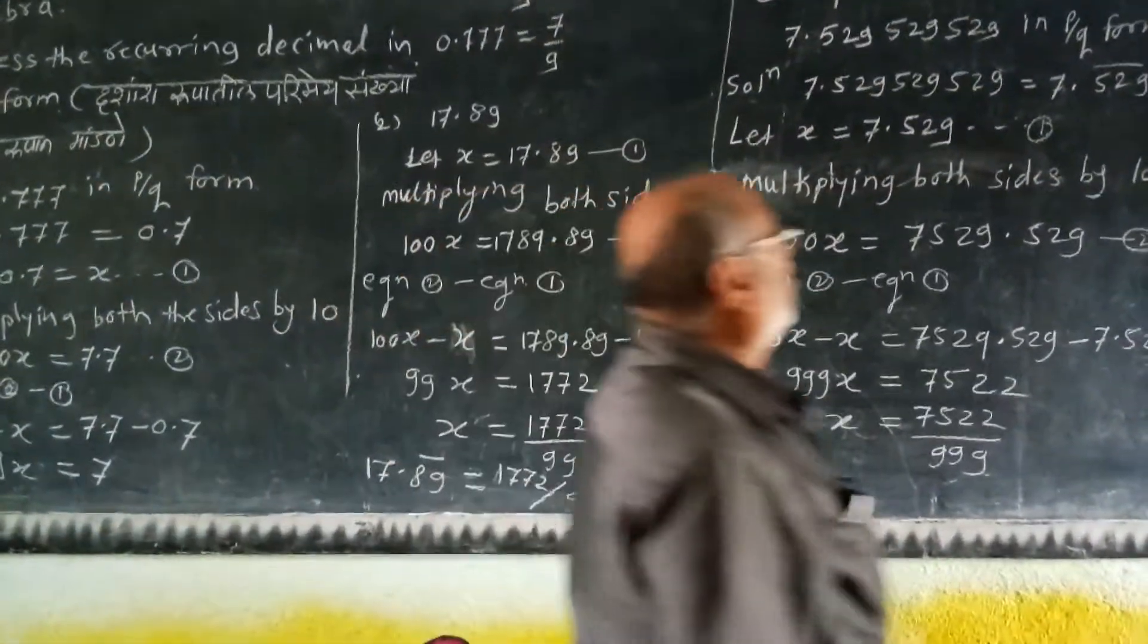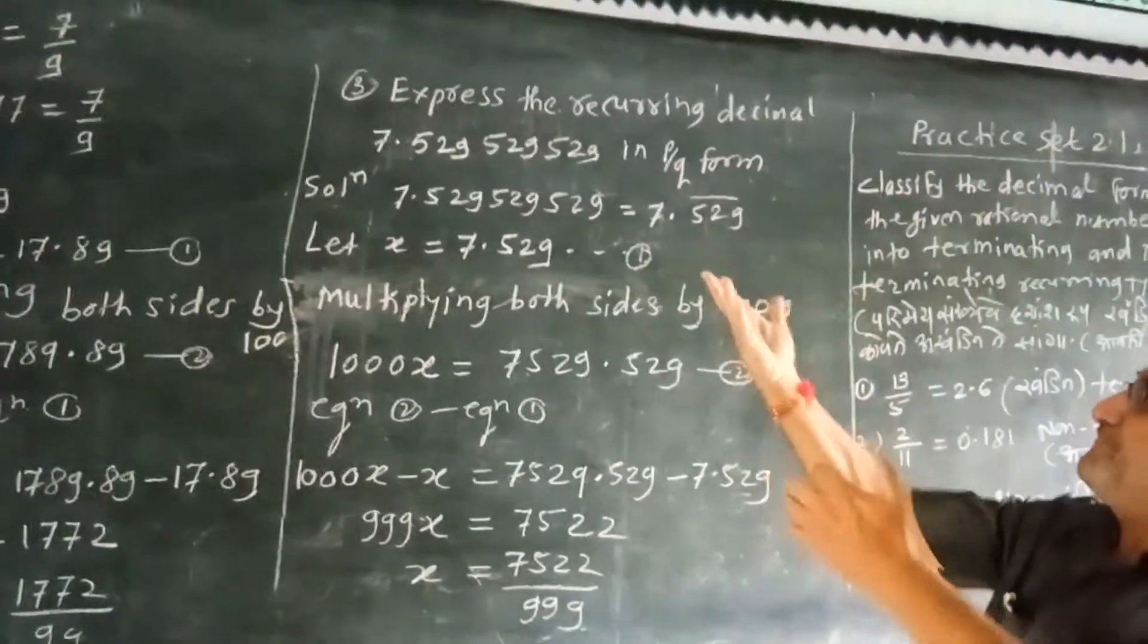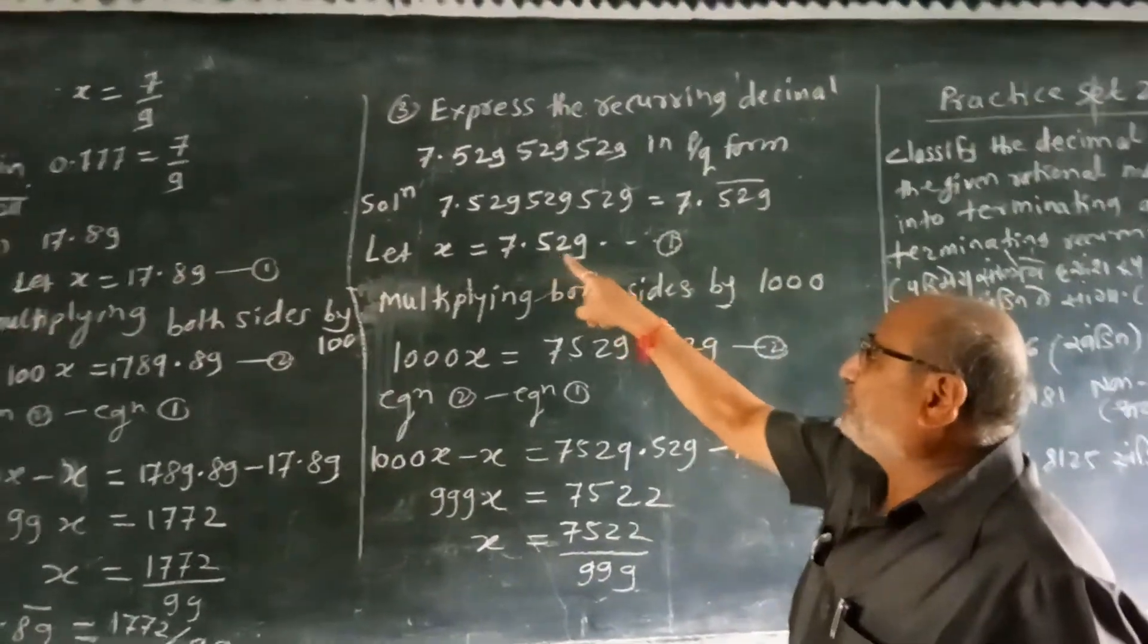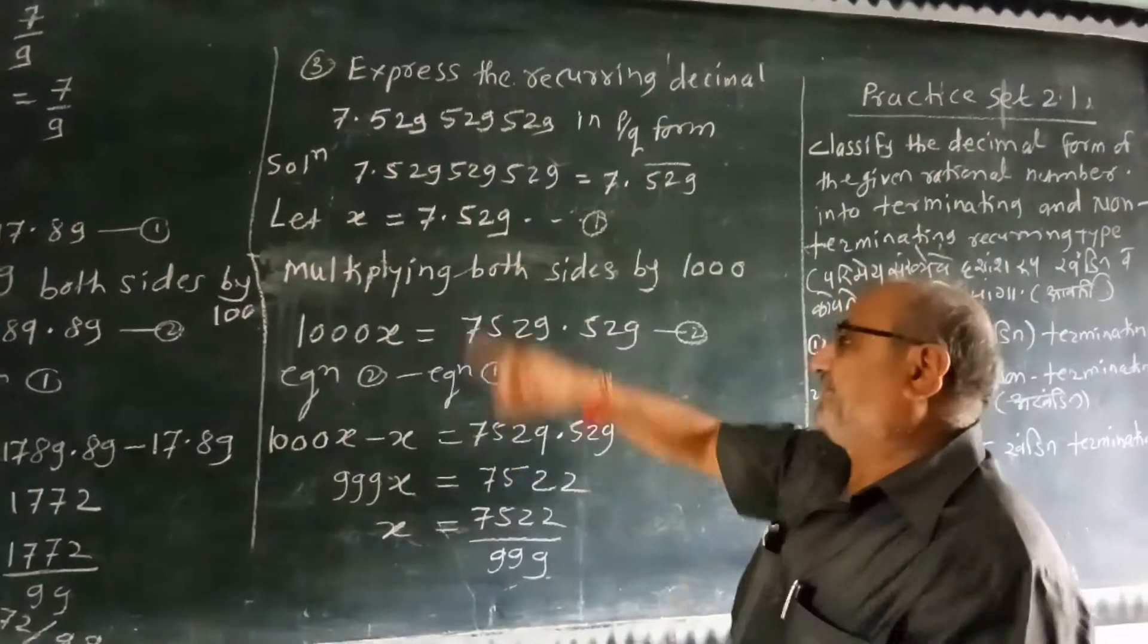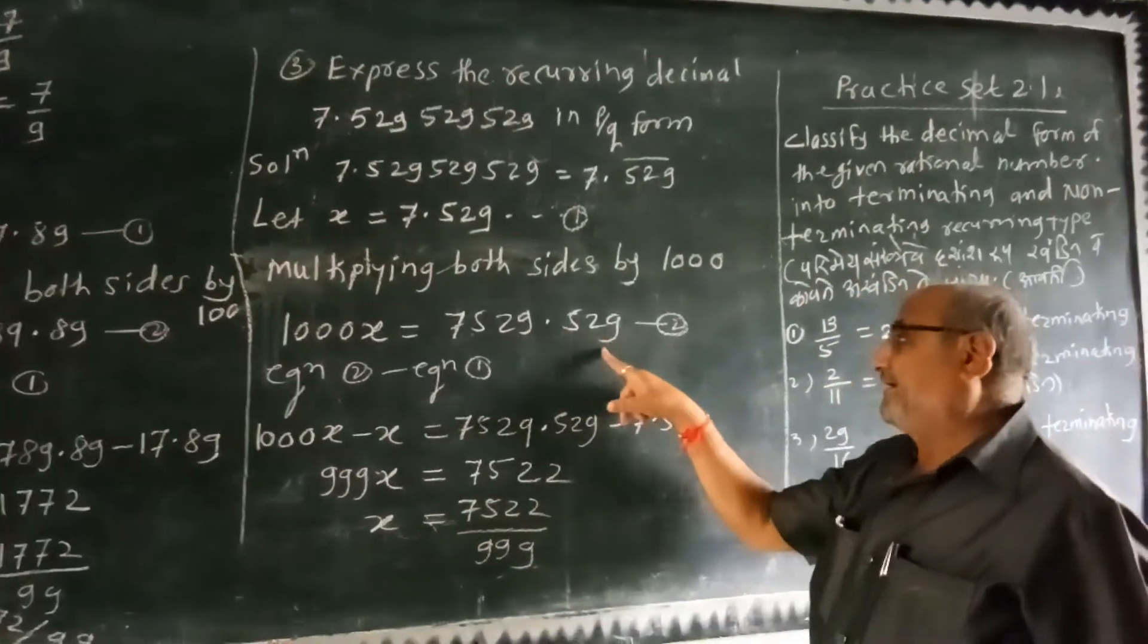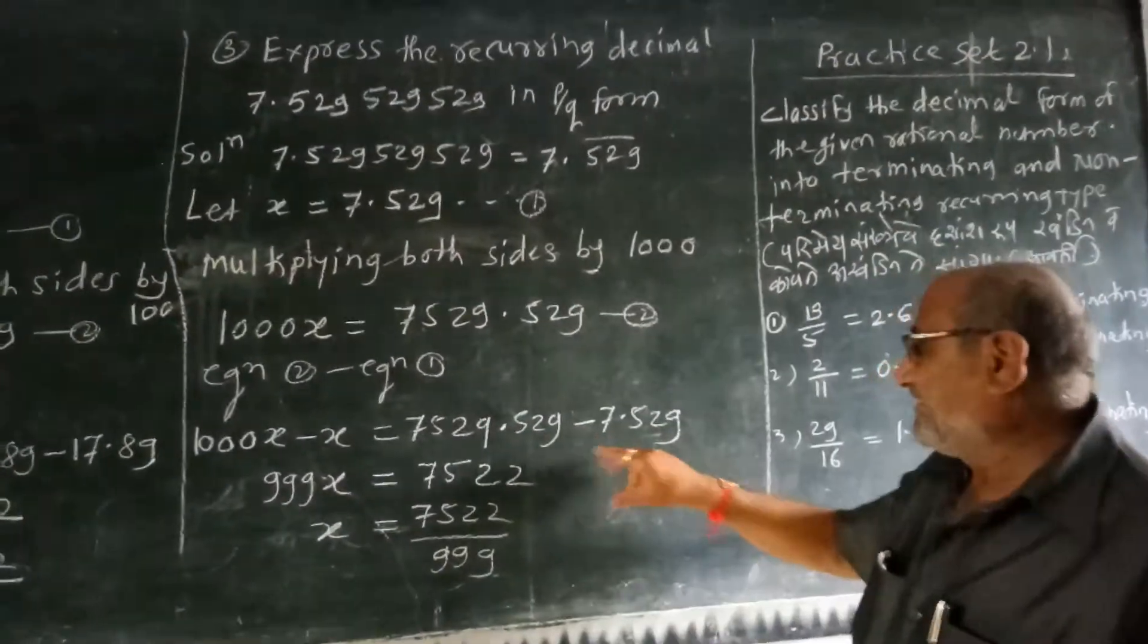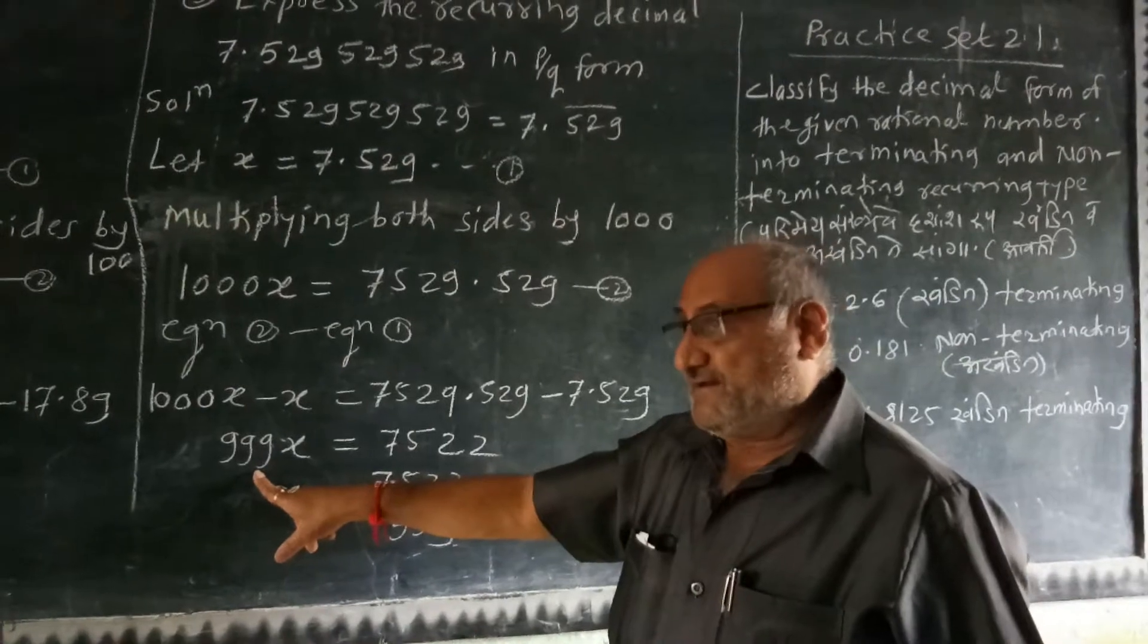Express the recurring decimal 7.529̄ (529 continuing pattern). Multiply by 1000: 1000x equals 7529.529̄. Equation 2 minus equation 1: 1000x minus x equals 7529.529̄ minus 7.529̄. 999x equals 7522.